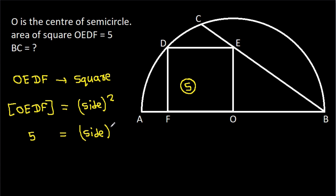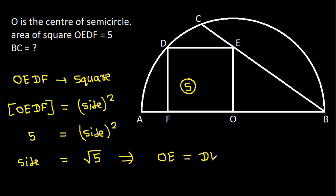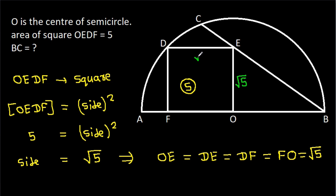So the side S will be root 5. That means OE, DE, DF, and FO are all equal to root 5. OE is root 5, DE is root 5, DF is root 5, and FO is root 5.